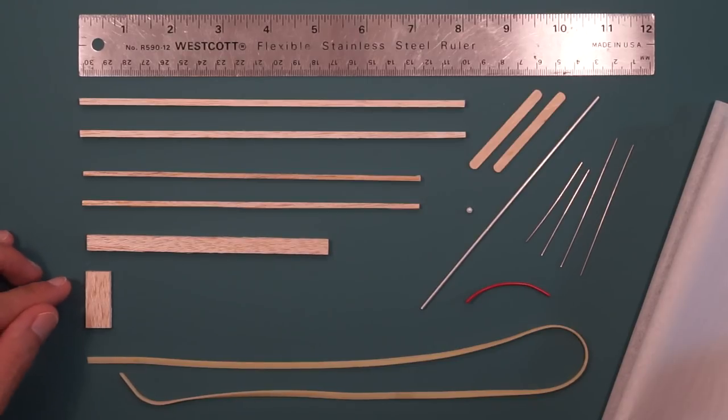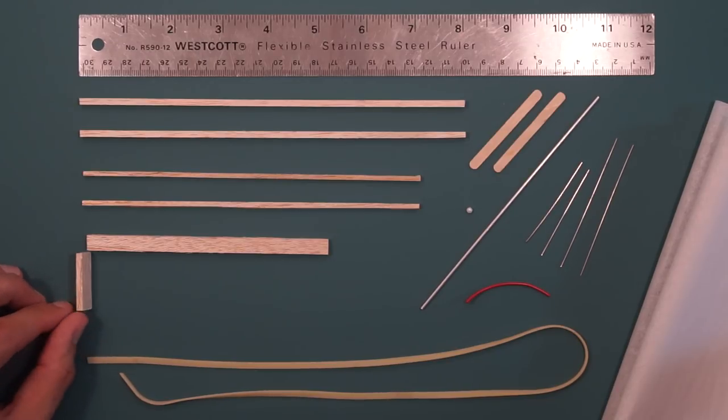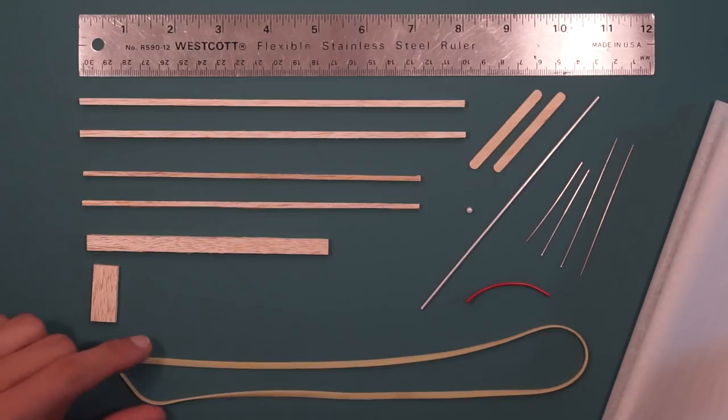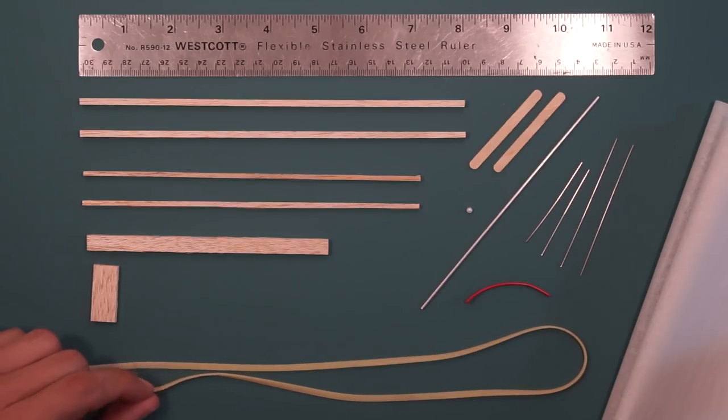This is the strut that holds the crank that moves the wings. That's 1 1/16 by 1/8. We have a rubber band here. This is a special type of rubber that's made for model airplanes. Don't use office rubber bands because the model will not fly correctly.